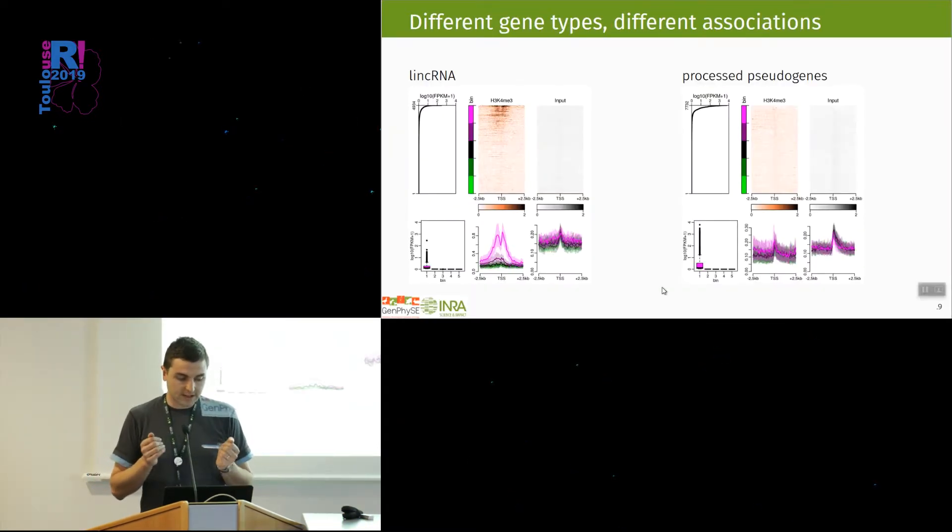We have also done the same by dividing different gene types here. So it's the same mark in the same tissue, but only looking at long non-coding RNA genes. Some of them are expressed, and the ones that are expressed do have the trimethylation of lysine 4, histone 3, at their promoter. Some processed pseudogenes are also expressed, but they don't show this enrichment of trimethylation of lysine 4 at the promoter. So it seems that different types of genes can show different association with epigenetic marks.